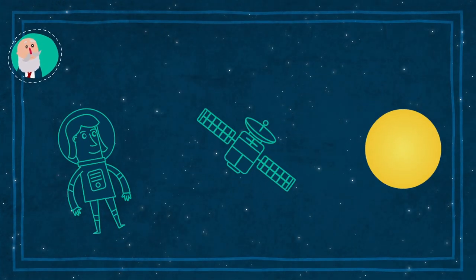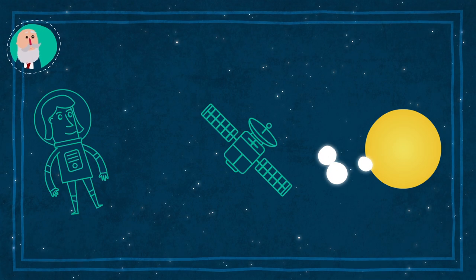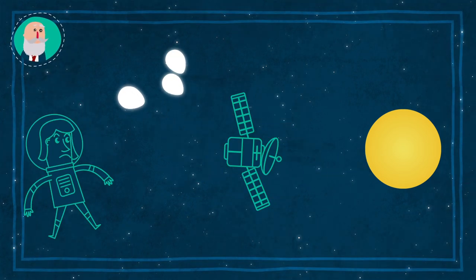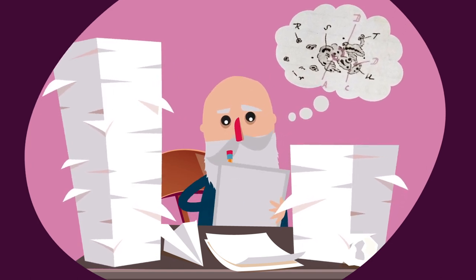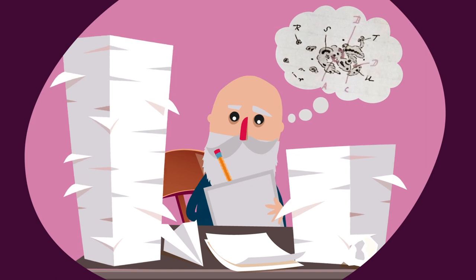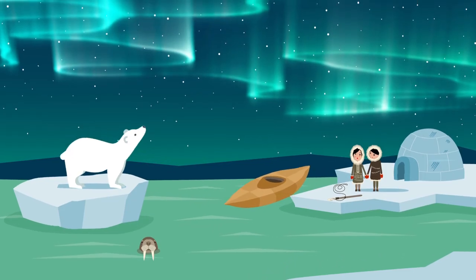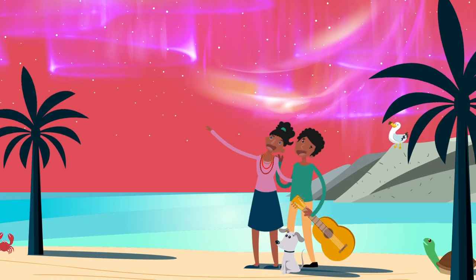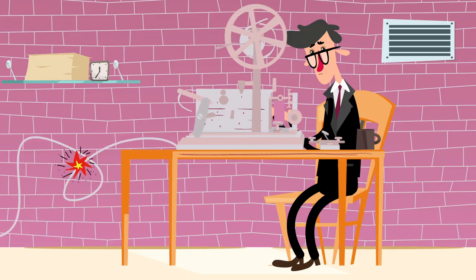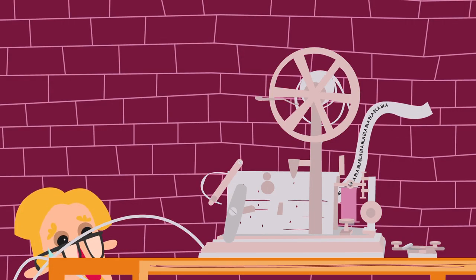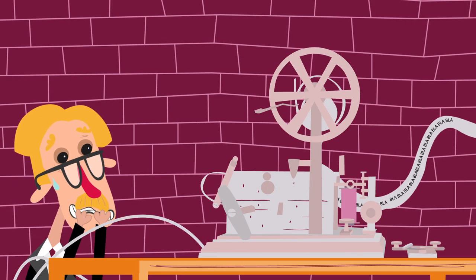In addition, solar storms disrupt telecommunications and can cause power outages. The super flare of 1859 was so strong that auroras were seen in such remote places as Greenland, Cuba, Peru. In some places, telegraphs went on fire. And in others, they worked without power.